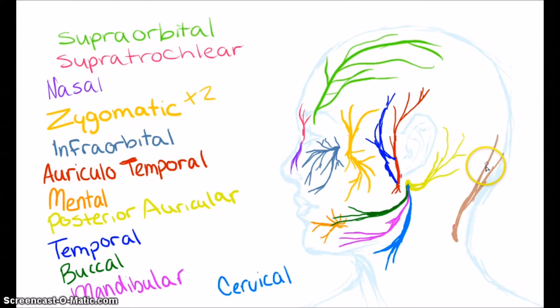The greater occipital affects the back of the scalp and the top of the head. The lesser occipital affects the muscles at the back of the skull.